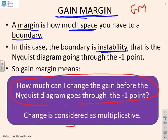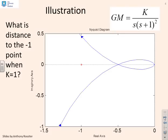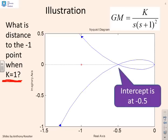A key thing to note is that this change in gain is considered as multiplicative. When we say how much can we change gain, we mean how much can I change the multiplier before I go closed loop unstable. Here's an example: you'll see we've given the Nyquist diagram of a system.